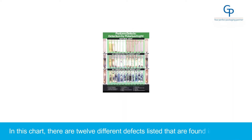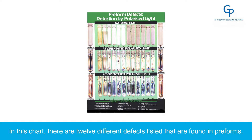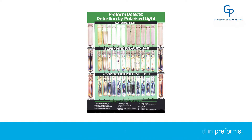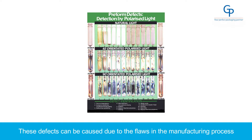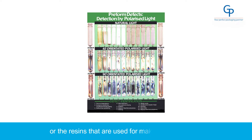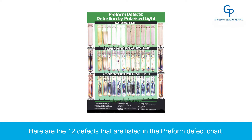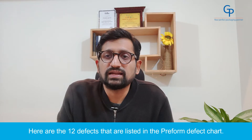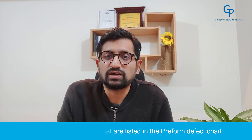In this chart, there are 12 different defects listed that are found in the preforms. These defects can be caused due to flaws in the manufacturing process or the resins that are used for making these preforms. Here are the 12 defects that are listed in the preform defects chart.